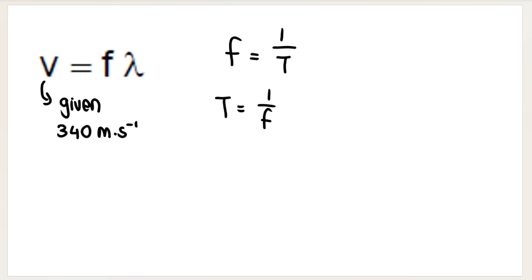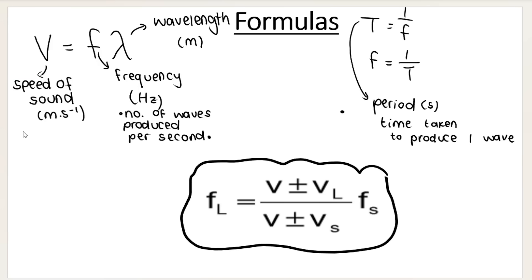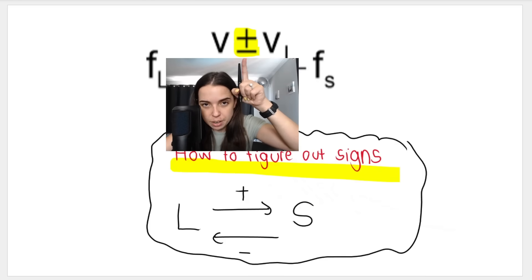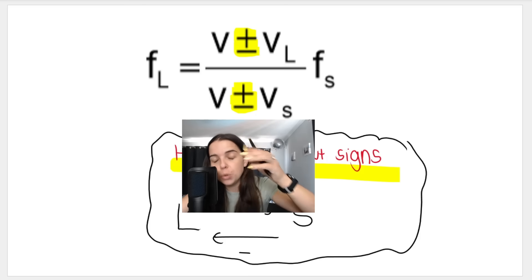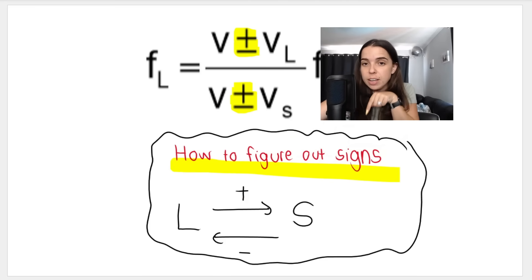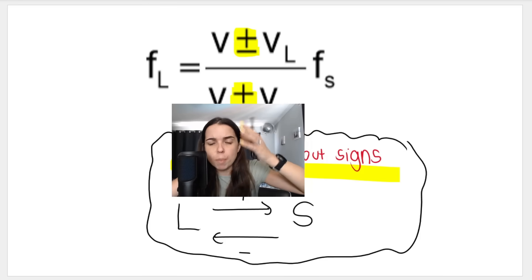The Doppler effect formula has a plus-minus at the top and a plus-minus at the bottom. Your standard formula — exactly as it appears on the formula sheet — is what you always write down first. When you substitute values in, you then use those plus-minus signs to figure out which sign to use: either a plus or minus at the top, and the opposite at the bottom.